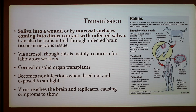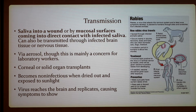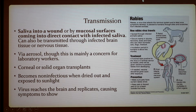The virus becomes non-infectious when dried out and exposed to sunlight. Rabies transmits by the virus reaching the brain and replicating, which causes symptoms to appear. This essentially shows a general overview — the bite site leads to the virus traveling to and inflaming the brain.